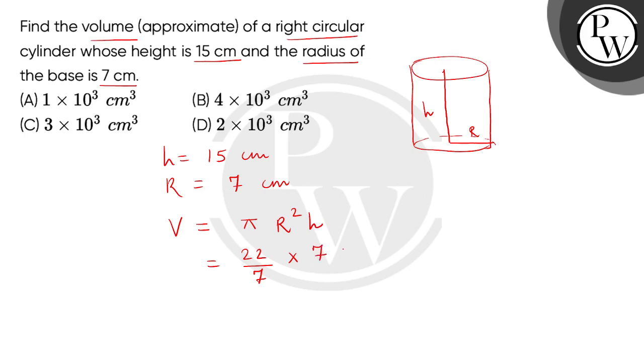r square को हम लेख सकते हैं 7 multiplied by 7 and h की value है 15. So बच्चों यहां से 7, 7 cancel हो जाएगा and हमें यह product मिलेगा 22 multiplied by 105 which equals 2,310 cm³.